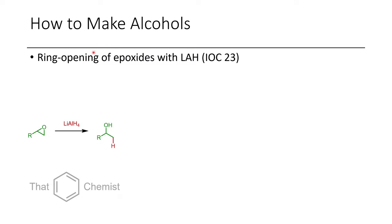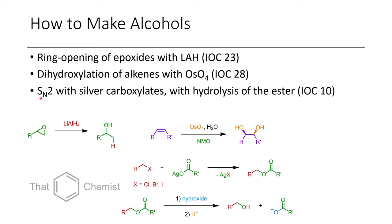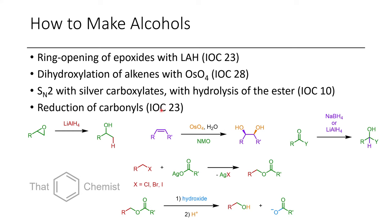If we want to make alcohols, we have several options. The first is the ring opening of an epoxide with lithium aluminum hydride, discussed in lecture 23. In lecture 28, we talk about the Upjohn oxidation or dihydroxylation of alkenes using osmium tetroxide. Another method is the SN2 reaction of a silver carboxylate with an alkyl halide, followed by hydrolysis of the ester to afford the alcohol. We could also use the reduction of carbonyls such as esters, ketones, or aldehydes to afford alcohols.